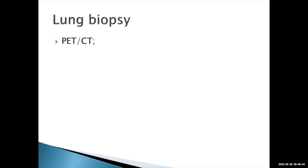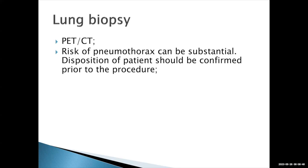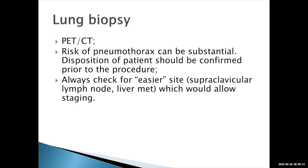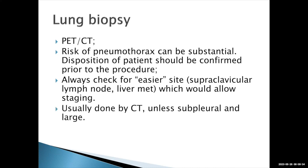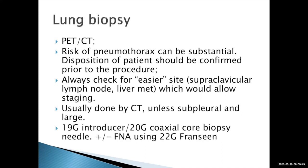Lung biopsies are important to establish a diagnosis. PET CTs are helpful to determine if the lesion is FDG-avid and high risk, and to determine where in the lesion we should biopsy for highest yield. The risk of pneumothorax is substantial, and we should always tell patients they may leave the biopsy room with a pneumothorax and may require a chest tube. Always look for easier sites first — many times there's a supraclavicular lymph node or liver metastasis that would provide histological diagnosis and also stage the patient. Most lung biopsies are done by CT unless the lesion is subpleural and very large. We use a 19-gauge introducer with a 20-gauge coaxial biopsy, and sometimes a 22-gauge needle for fine needle aspiration.